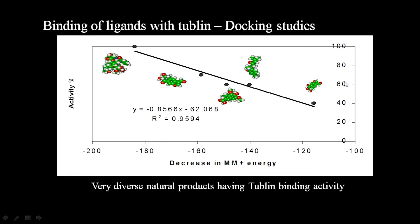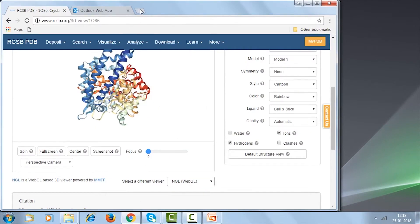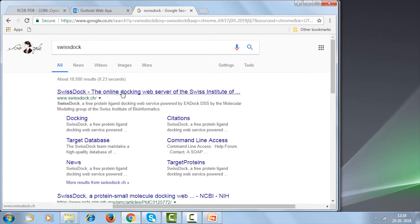I am showing many examples of target-based drug design where we can do the binding of various ligands. Once we have the protein of interest — obtained from the PDB database — we can perform the docking. AutoDock is a very good software, and SwissDock is also available through a web server and can do a good job.